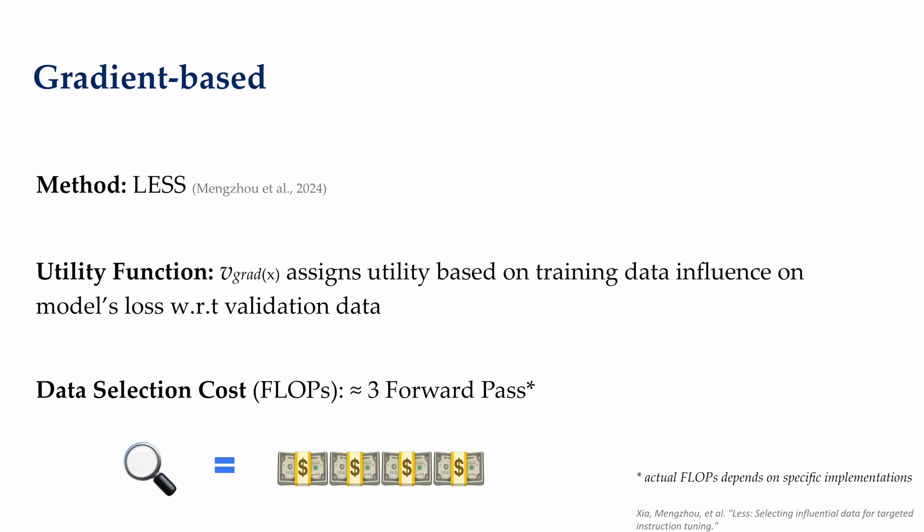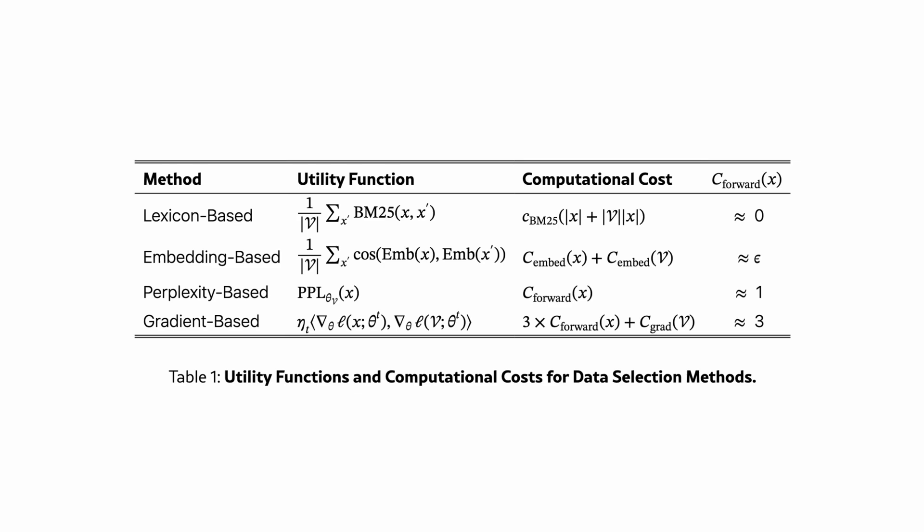Arguably, the most interesting and high-performing method is to design a gradient-based utility function for data selection. This is usually formulated with influence function, which evaluates the utility of data points based on the influence on the model's loss with respect to the target data. The utility function can quantify this influence by computing the inner product between the gradient of the loss on training point x and the gradient on the loss on validation set v, scaled by a learning weight eta at that time step. Due to the need to compute gradient, the compute needed per data point is approximately equivalent to three forward passes, assuming that one backward pass equals two forward.